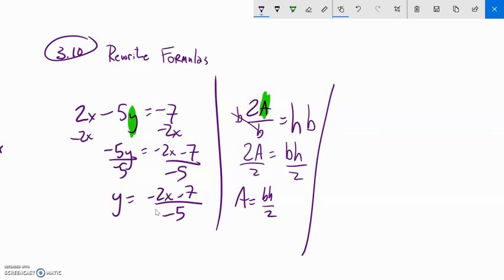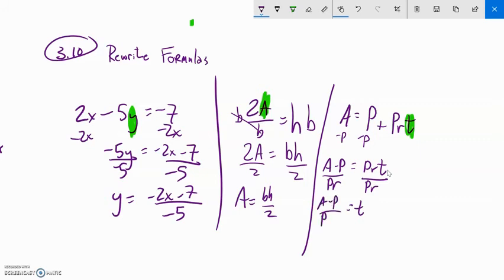I'm just going to do a few more examples like this. A equals p plus p times r times t, and I'm going to solve for t. So we'll subtract that p from both sides. And now these are all multiplied together, the p, the r, and the t. So I can divide both sides by pr. A minus p over pr. And that's my answer. That's it right there.